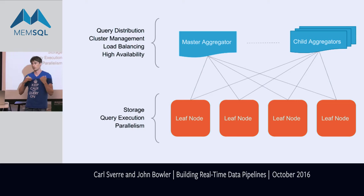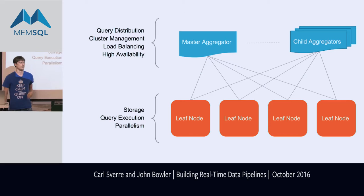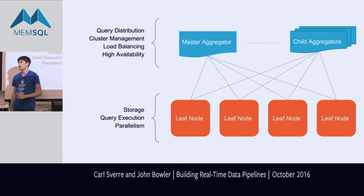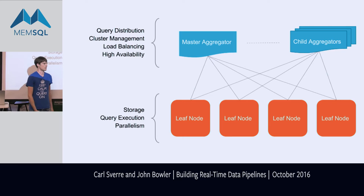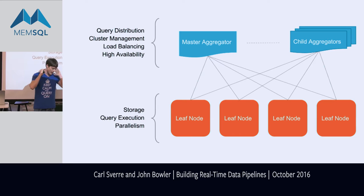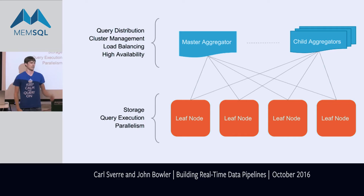Leaf nodes satisfy two really powerful features. First, storage: if you have a leaf node you can store data; more leaf nodes means more storage. Second, query execution: the more leaf nodes you have, generally the faster your database goes. Want to go faster? Add more leaf nodes — it scales up nicely. You also get natural parallelism because we shard queries to all leaf nodes, taking advantage of many cores. Real solid Linux performance just works, which is really exciting.